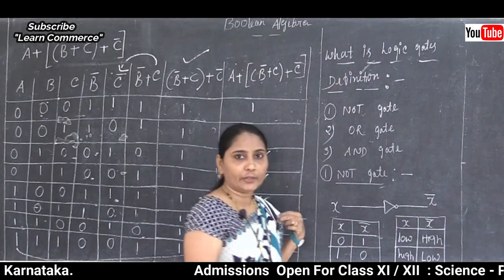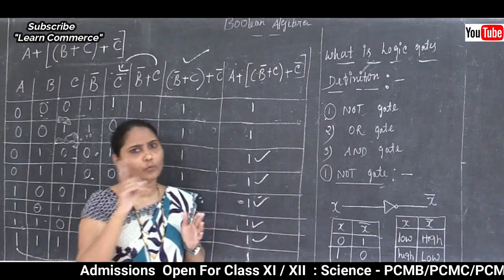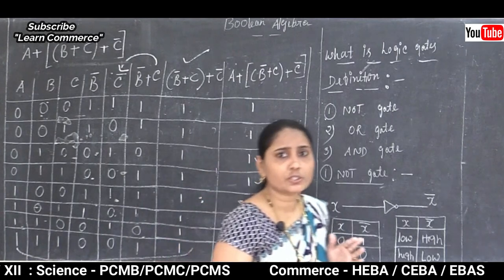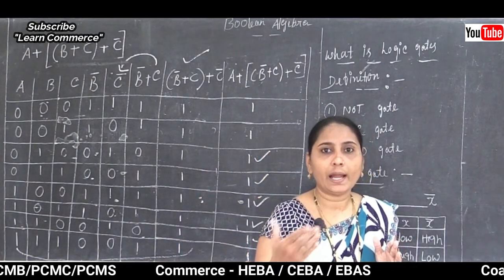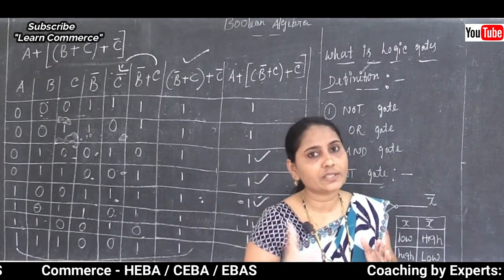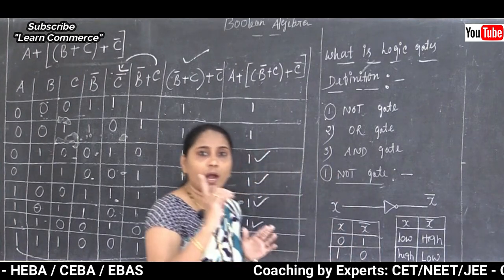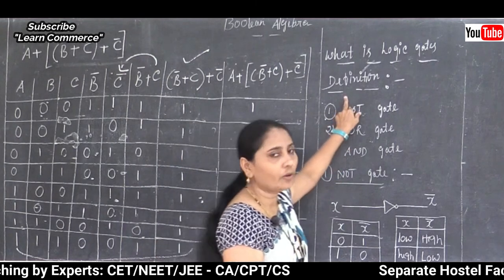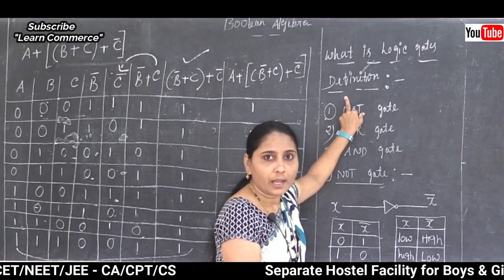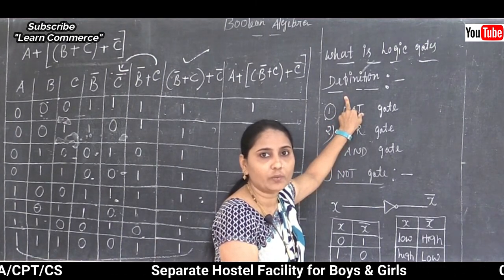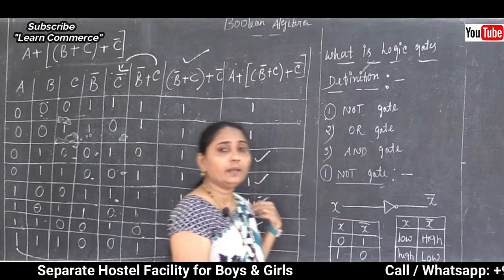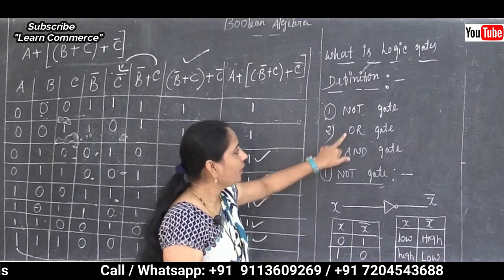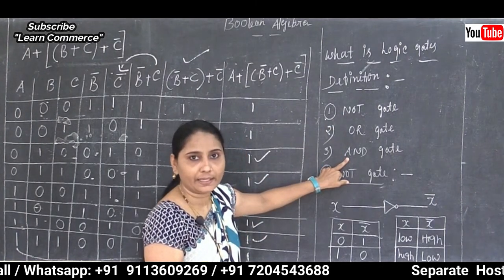We can use a NOT gate with one input and one output, or OR and AND gates which require two or more inputs. The logic gate always produces only one output. There are three types: NOT gate, OR gate, and AND gate.